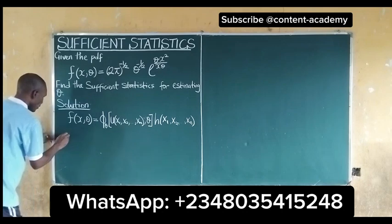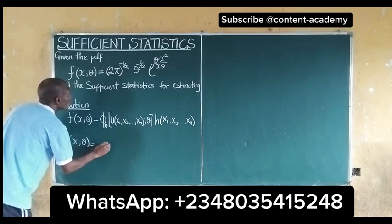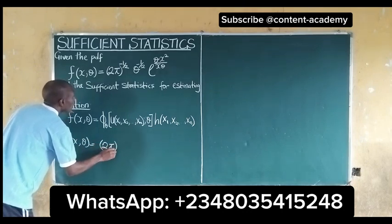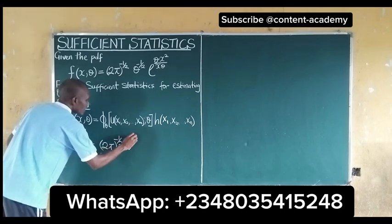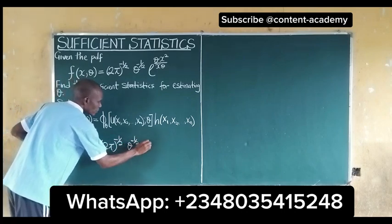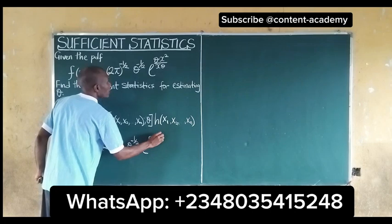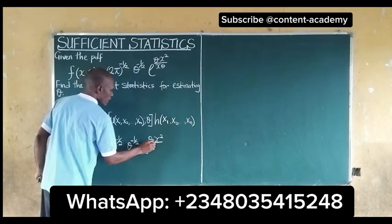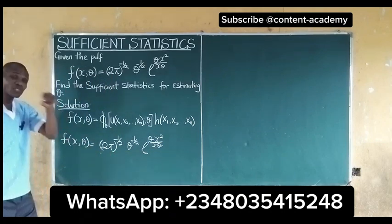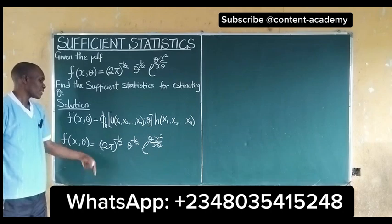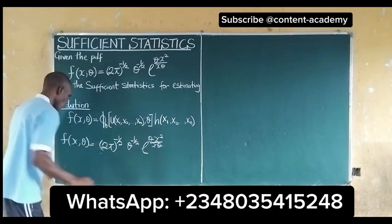How do we go about it? Our function is given as: (2π)^(1/2) · θ^(1/2) · x^(1/2) · exp(θx² / xθ). This is our component. The first thing to do is to take the product sum of this — that is, the likelihood function.